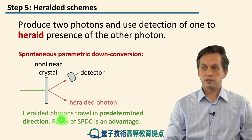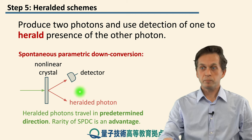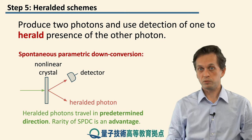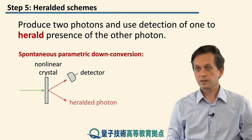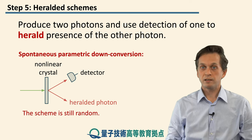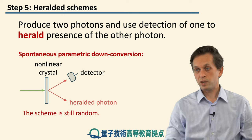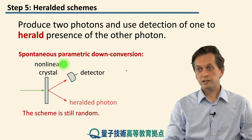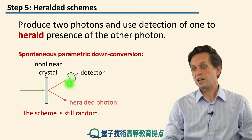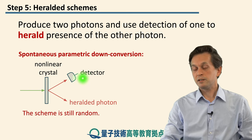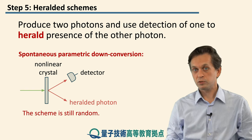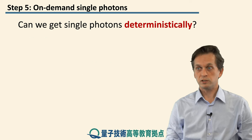If the SPDC process were more efficient, it could happen that our detector goes click and we have just too many photons, which is not useful for quantum communication. However, this whole process is still random. Sometimes we get this pair of photons, and if we do, we have to consider the inefficiencies in the detector — sometimes it goes click when there isn't a photon (these are known as dark counts), and sometimes there is a photon and the detector doesn't detect it. So what we are looking for is a nearly deterministic single photon source, and such schemes actually do exist.